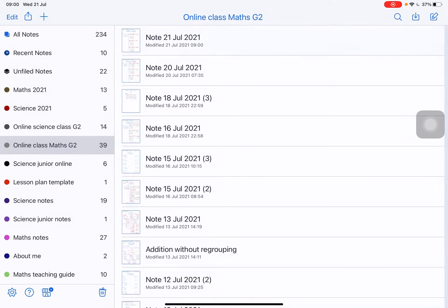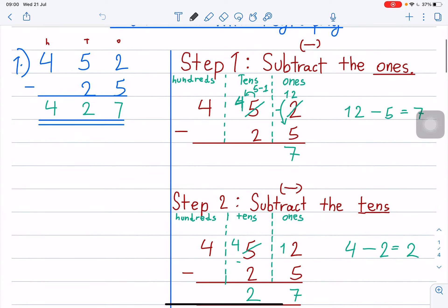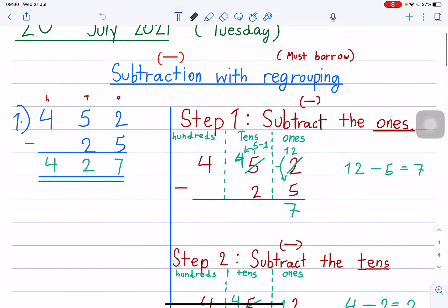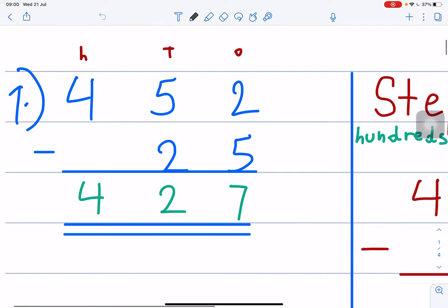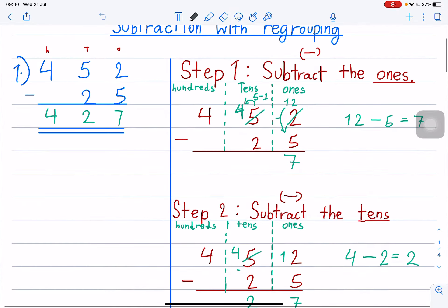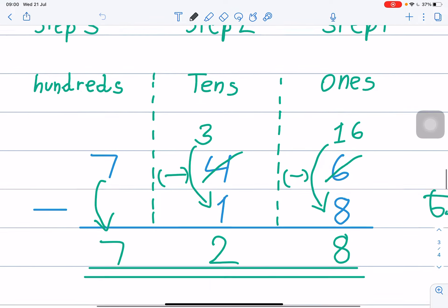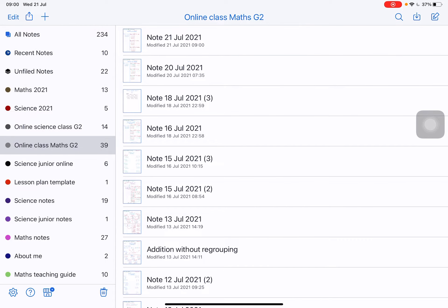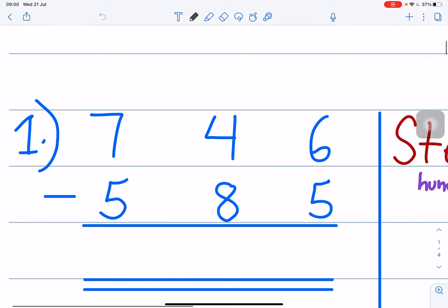Yesterday, you did this. Yesterday on Tuesday, we did like this. That's 452 minus 25, right? And then we did 746 minus 18. So today, we will do like this: 746 minus 585. You have one more number here.